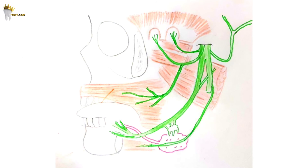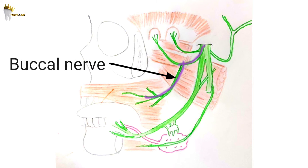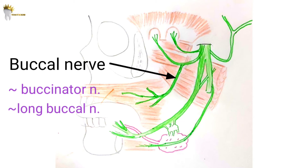The undivided nerve divides into a small anterior division and a large posterior division. The anterior division runs forwards under the lateral pterygoid muscle for a short distance, then passes between the two heads of the lateral pterygoid muscle. From this point it is known as the buccal nerve, also called the buccinator nerve or long buccal nerve. Importantly, the buccal nerve does not innervate the buccinator muscle — that is supplied by the facial nerve. Instead, the buccal nerve gives sensory innervation to the skin of the cheeks and the buccal gingiva of the mandibular molars and the mucobuccal fold in that region.